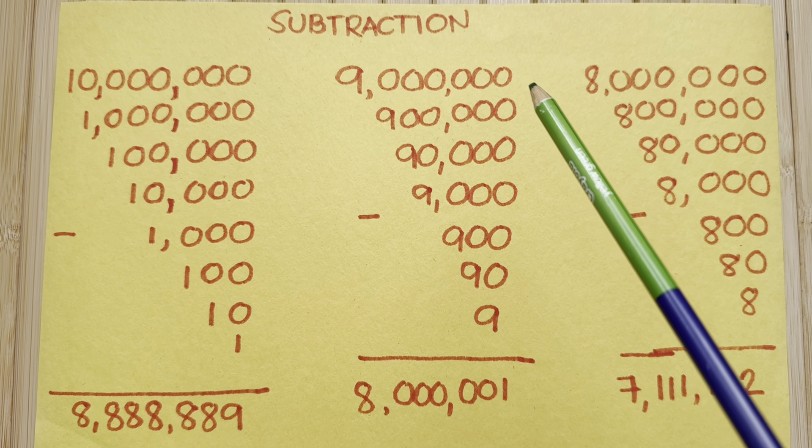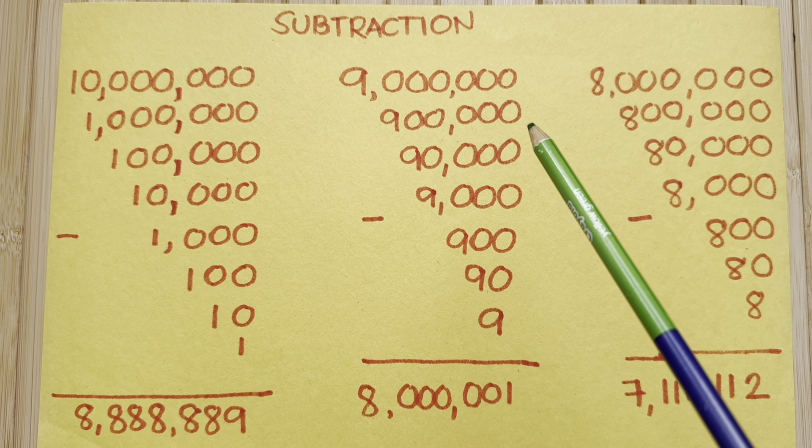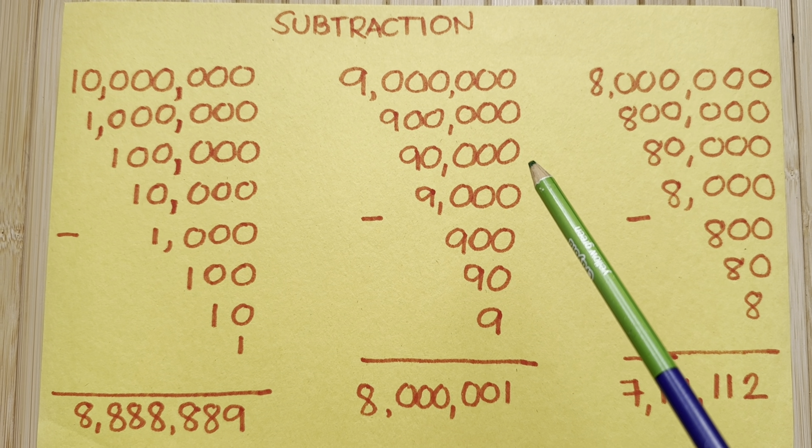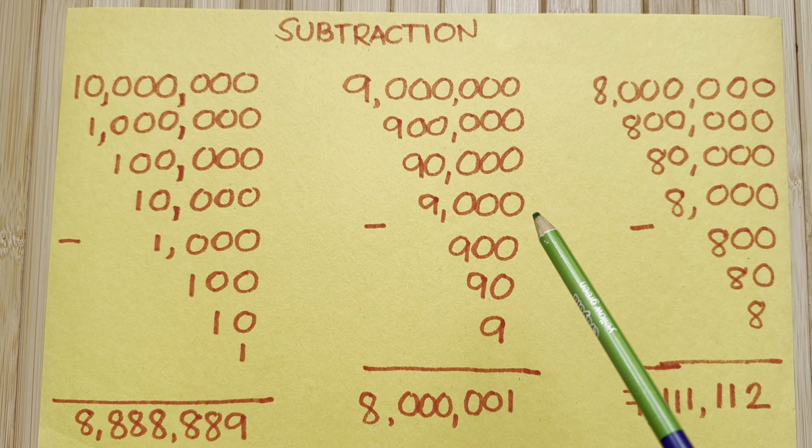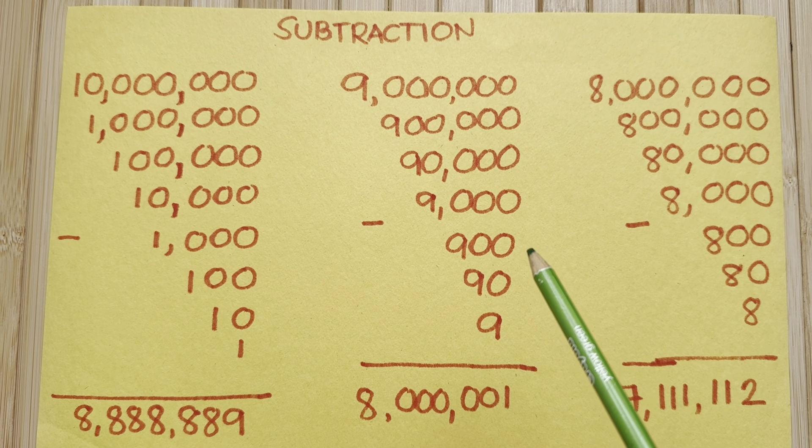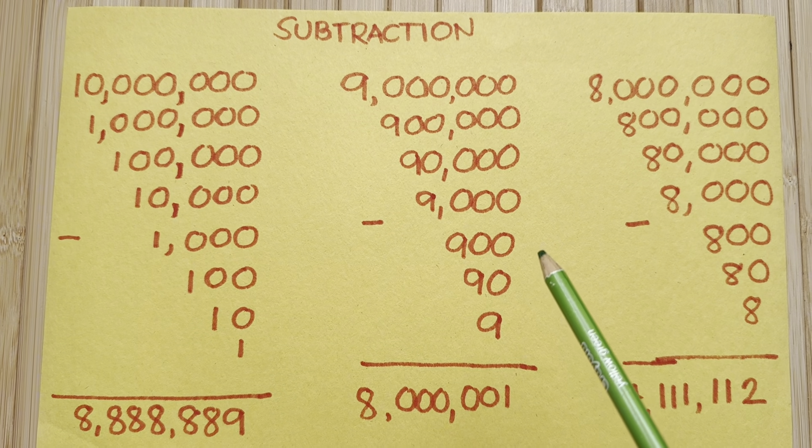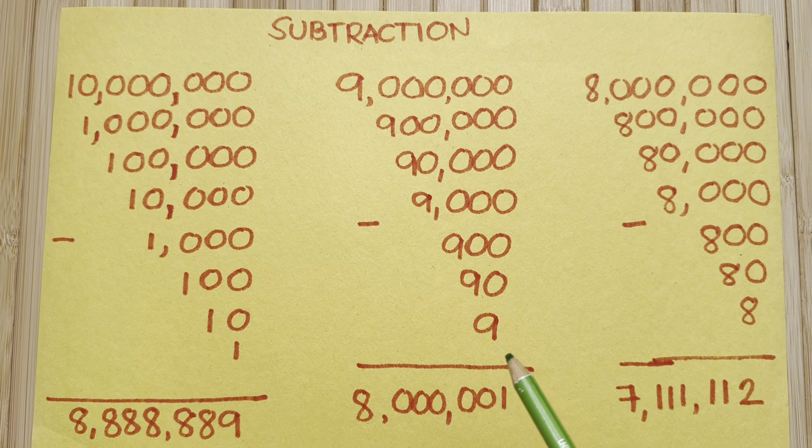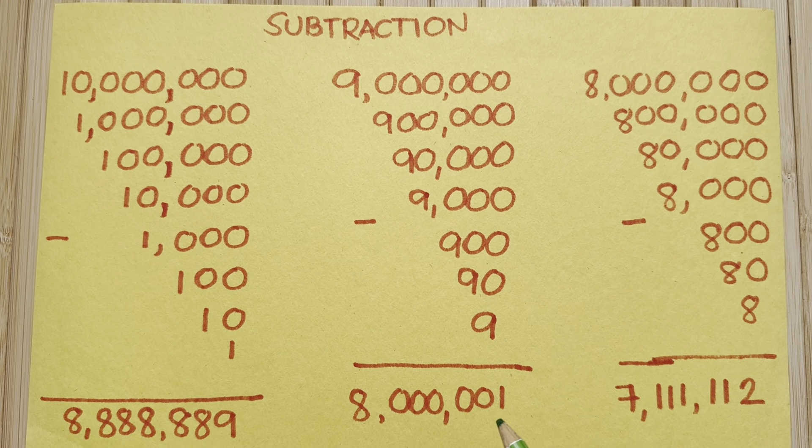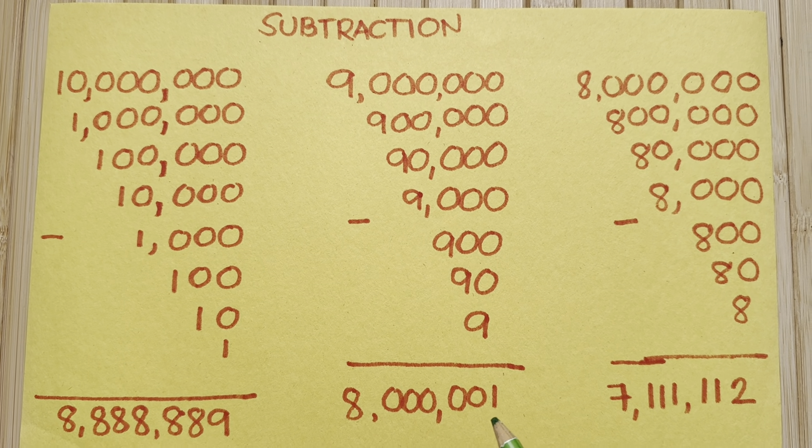9 million minus 900,000 minus 90,000 minus 9,000 minus 900 minus 90 minus 9 equals 8,000,001.